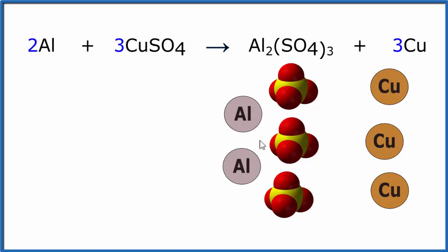We should note, aluminum has a three-plus charge. It was originally zero, and the copper has a zero. It was originally two-plus. So the aluminum transferred electrons to the copper. That also makes this a reduction oxidation reaction, or a redox reaction.